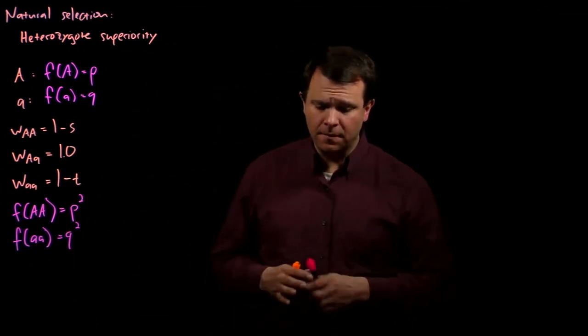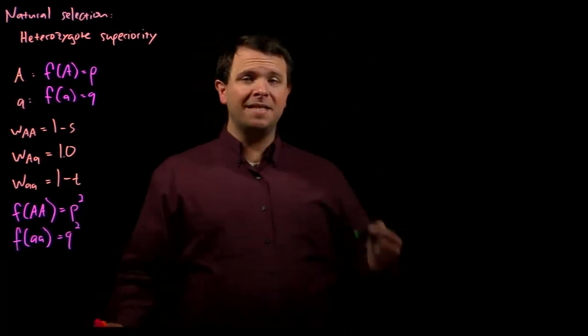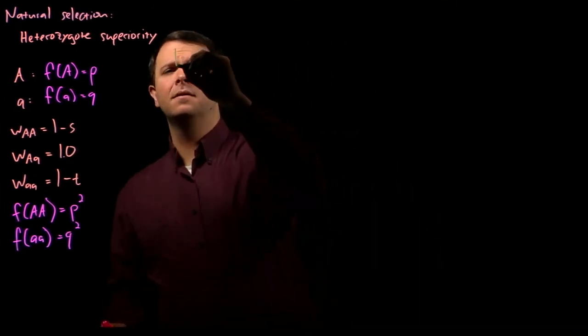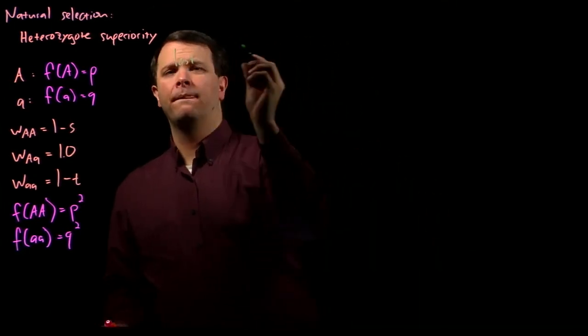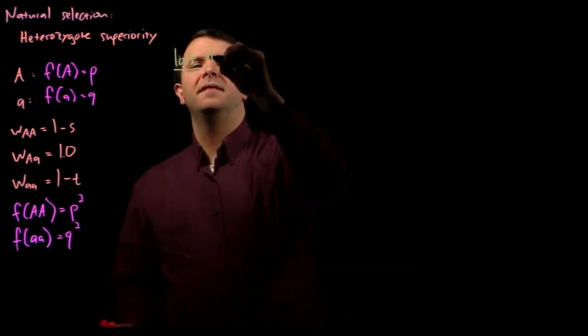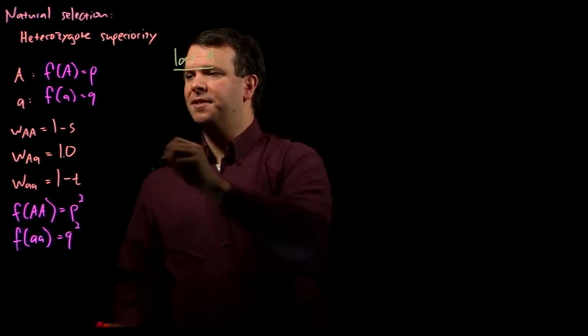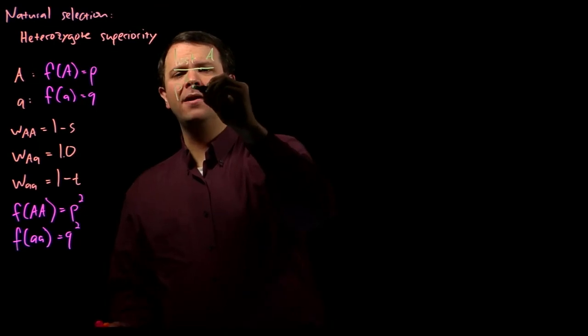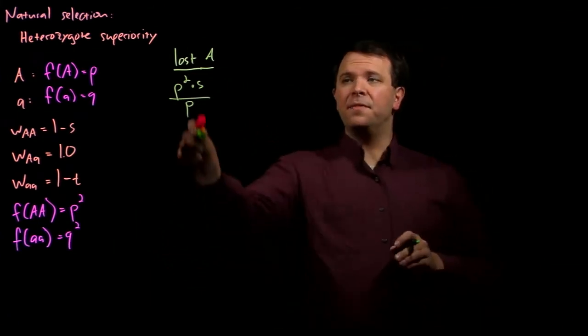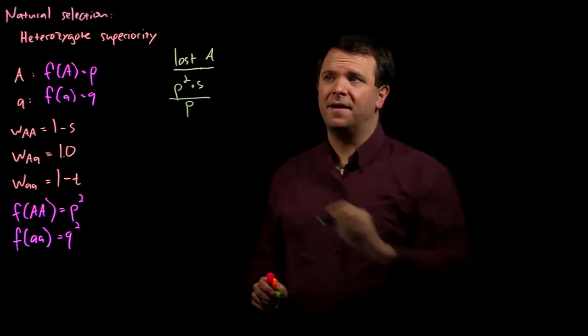And so, the proportion of dominant alleles that are lost each generation due to selection is p squared times s over p. Remember, this is the proportion of alleles that are lost, which is why we're dividing by p here.